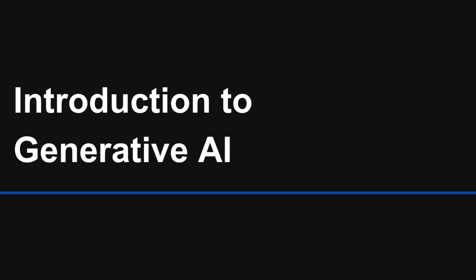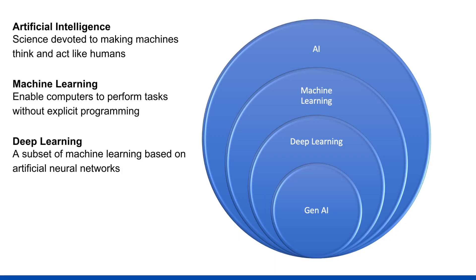Welcome to the second introductory chapter: Introduction to Generative AI. I want to set the scene before we move on to talking about large language models or the risks within generative AI. Let's start at a high level — what is artificial intelligence? AI is a science devoted to making machines think and act like human beings. AI has multiple subsets, but the most popular application is machine learning.